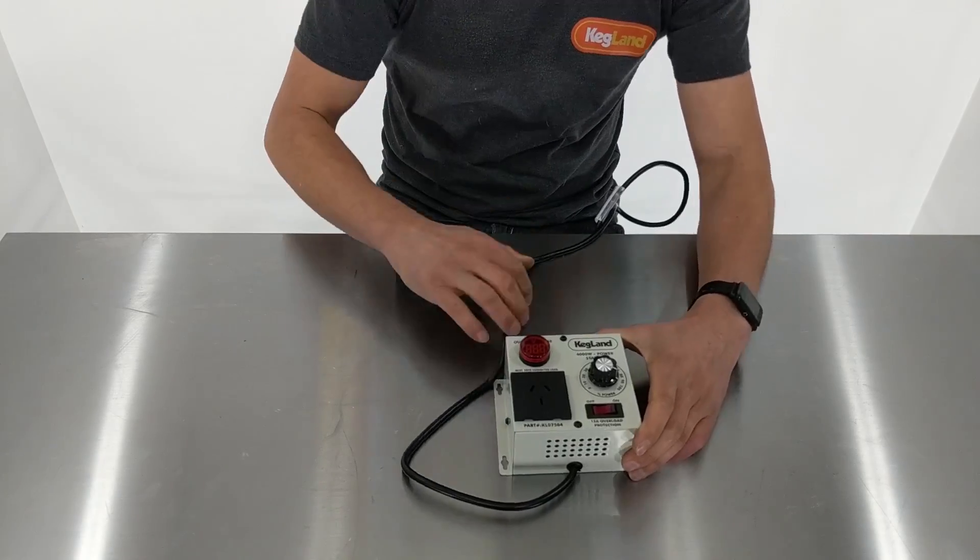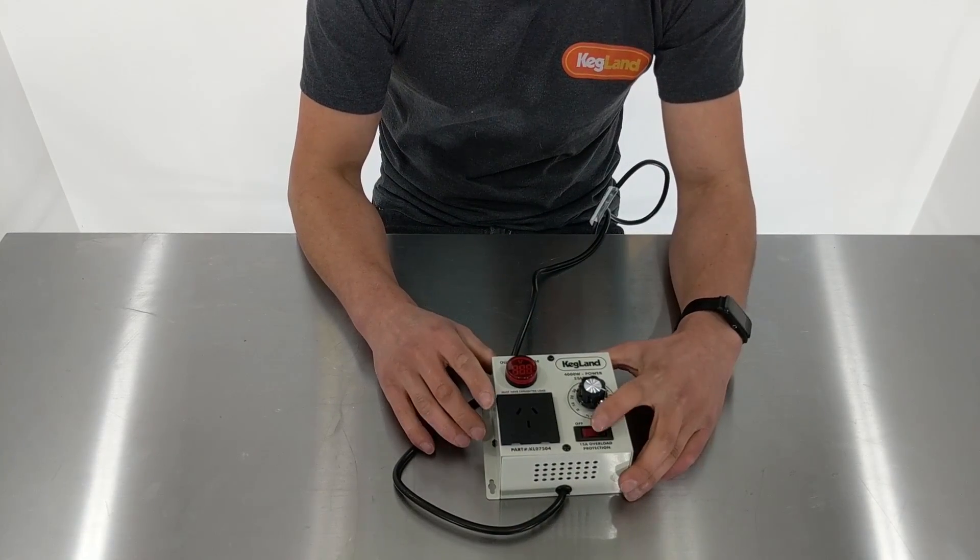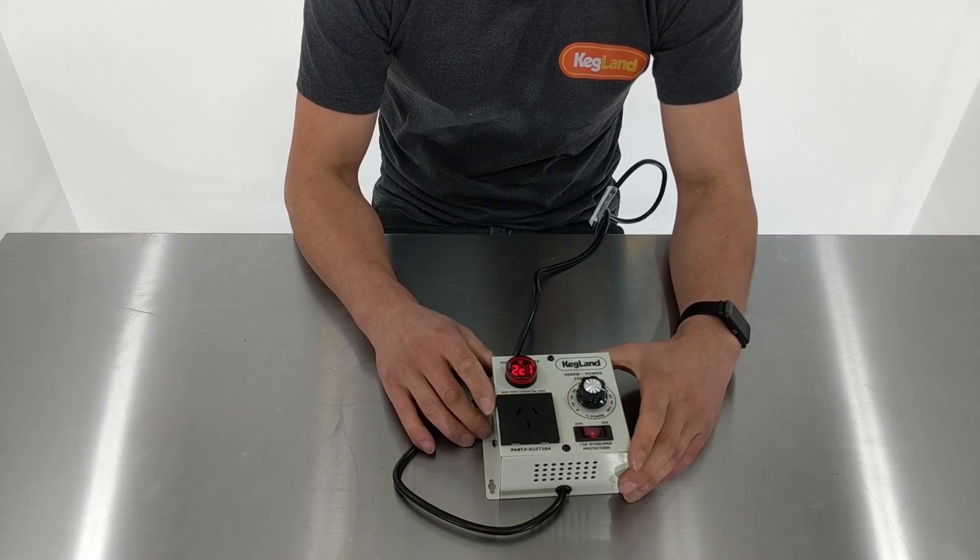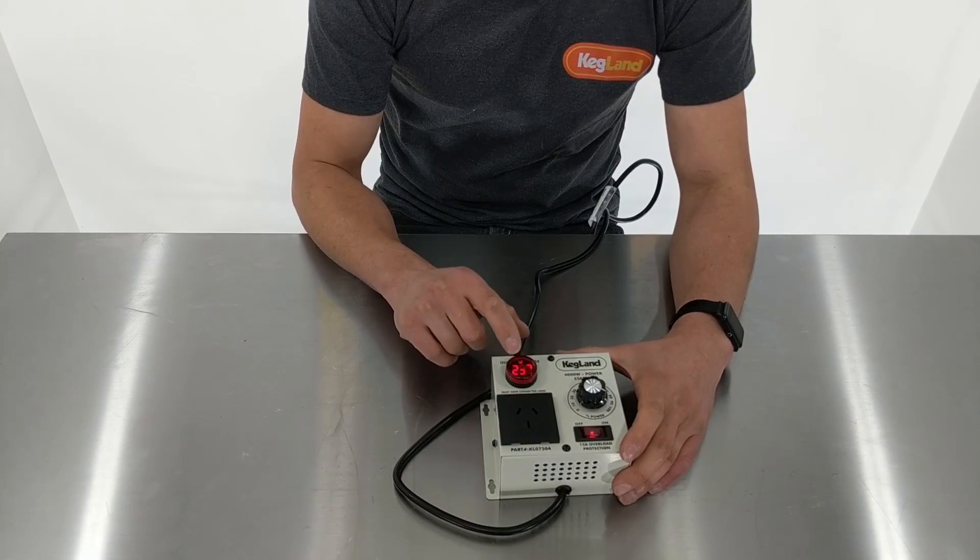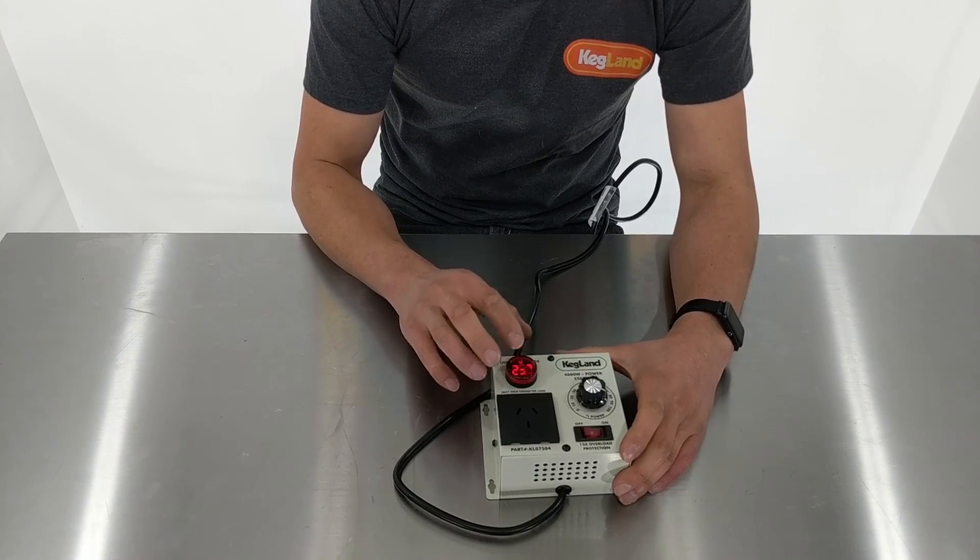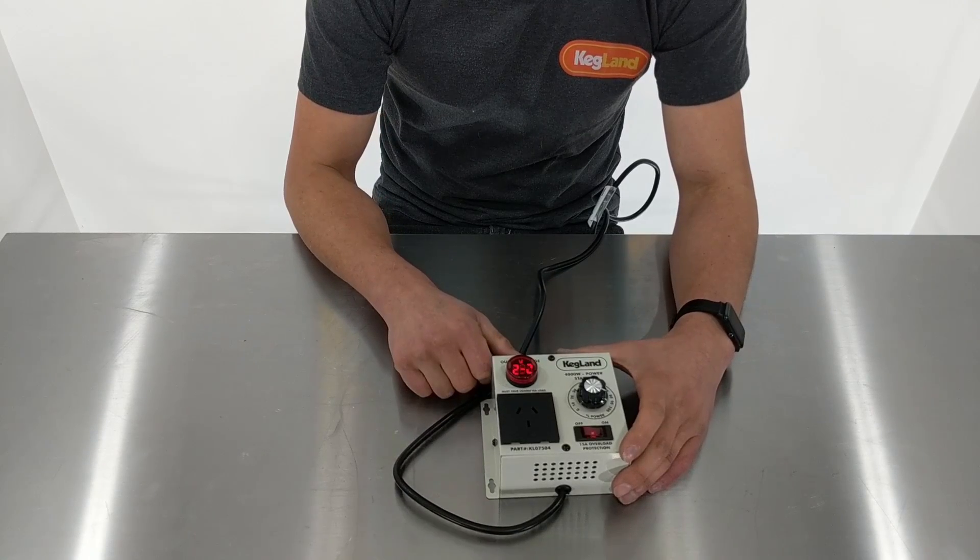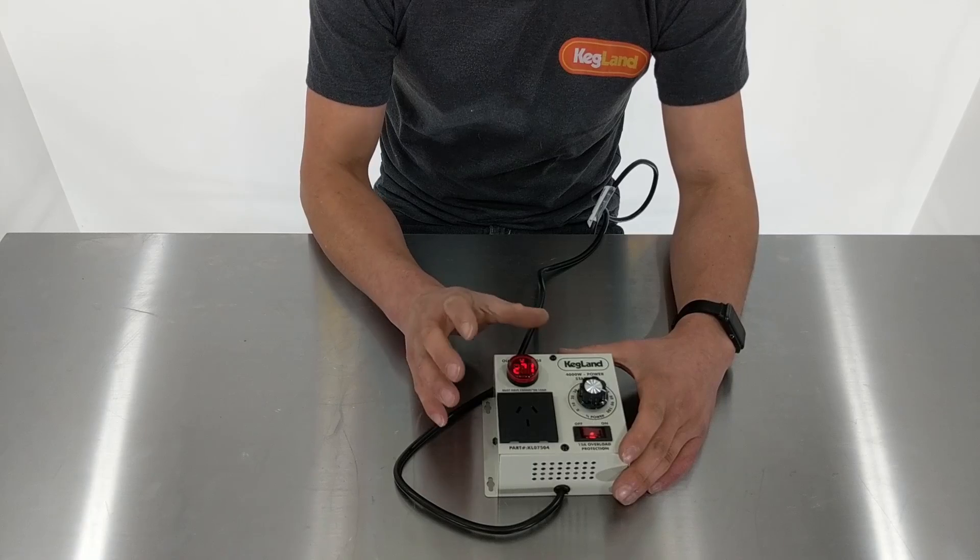Now on the power controller itself you've got an on button here so you can give power to the unit, and then you've got a little LED display here which shows you and gives you an indication of the amount of volts that you're putting through the device because it's clipping the waveform.